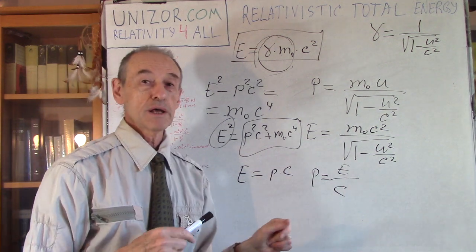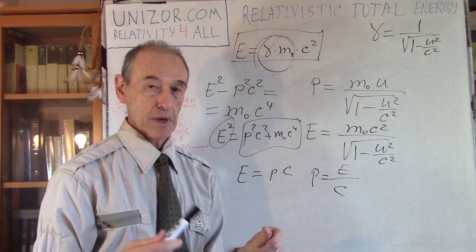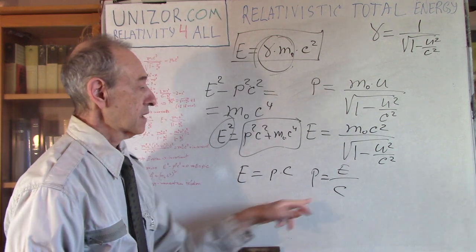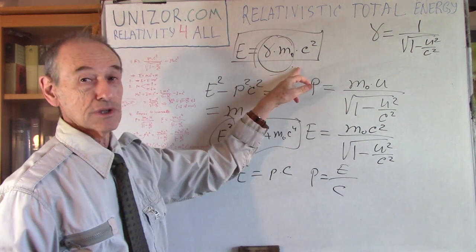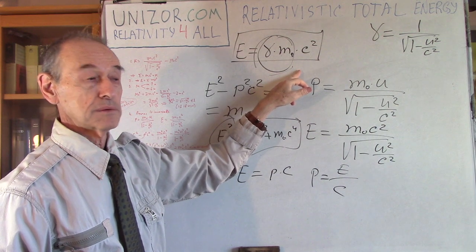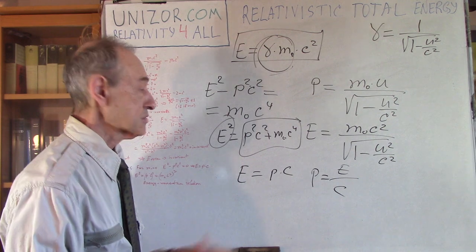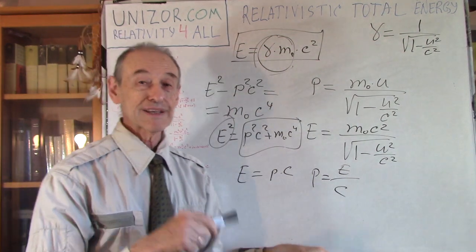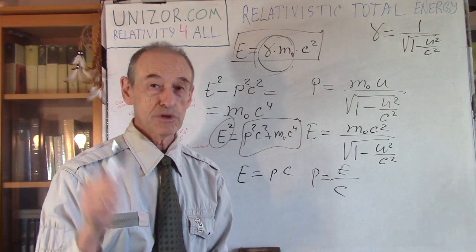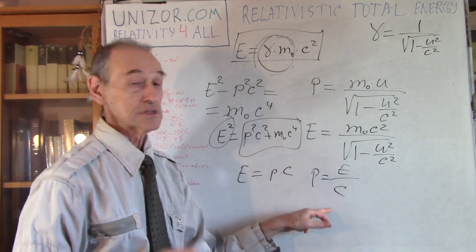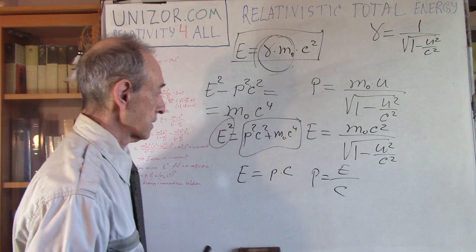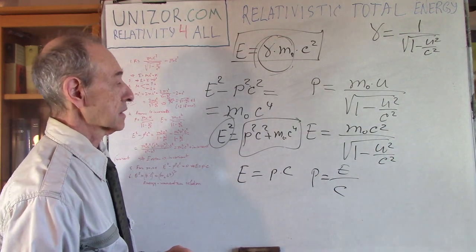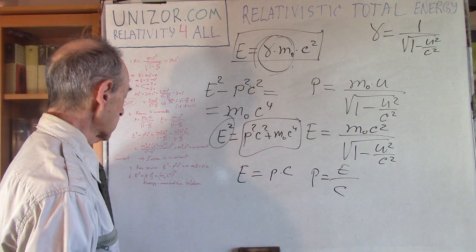By the way, the same formula can be obtained from classical electromagnetism and Maxwell's equations using something called the Poynting vector — Poynting is a name. What's interesting is that from this energy-momentum equation we can actually derive this formula algebraically, which is another approach and another confirmation. Using this theory we have arrived at a formula known since the end of the 19th century — before Einstein, before the theory of relativity — this formula was known for light and electromagnetic oscillations.